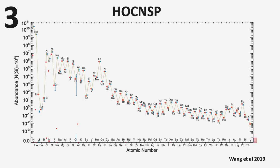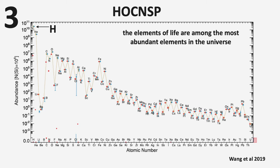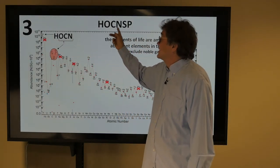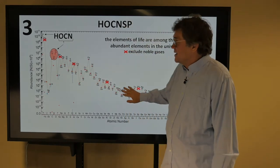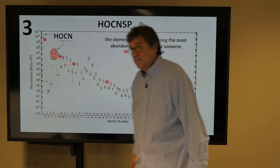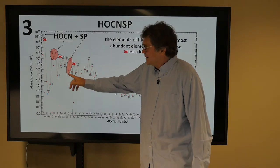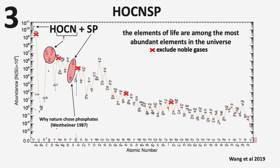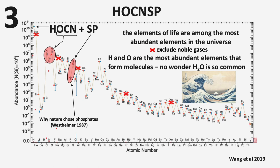Now, number three, these HOCNSP, those hydrogen, oxygen, carbon, nitrogen, sulfur, and phosphorus, where are they? Well, these elements of life are among the most abundant elements in the universe. So where's hydrogen? Hydrogen is here, the most abundant element. And then, let's get rid of the noble gases because they don't make any molecules, and so they're not interesting. They can't form life. So what is left? Well, here is the O, C, and N of O, C, and N right here. And you can see how abundant they are compared to these other elements. Remember, this is a factors of 10, 10, 10, factors of 1,000. And then there's S and P. Here's S and here's P. Now, P is a little bit lower, and you might say, why did nature choose phosphates? And if you're interested in that question, have a look at Westheimer's 1987 paper. So H and O are the most abundant elements that form molecules. So no wonder H2O is so common. No wonder there's water on lots and lots and lots of other planets, we think.